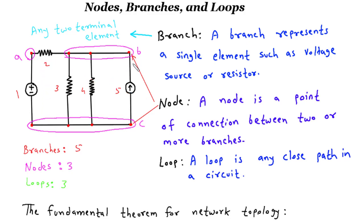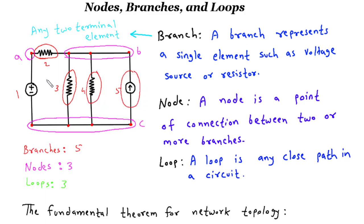Moving on to branches: they are the individual paths or routes that connect the various components within a circuit. In simpler terms, a branch is a segment of a circuit that lies between two nodes. Each branch is typically represented by a straight line in a circuit diagram. It allows current to flow from one node to another, and circuits can have multiple branches depending on their complexity.